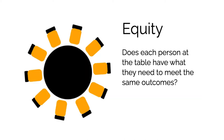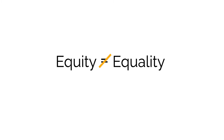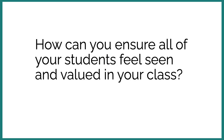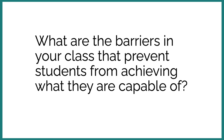Equity asks: does each person at the table have what they need to achieve the same outcomes? In teaching, equity is about identifying barriers in your class that prevent students from being able to achieve what they're capable of. It requires us to be race conscious as opposed to colorblind. And equity is not the same as equality. Equality is treating everyone the same with the intent to be fair, and that's a problem because it implies that everyone is the same — and that's not true. How can you ensure all of your students feel seen and valued in your class? What are the barriers in your class that prevent students from achieving what they're capable of?